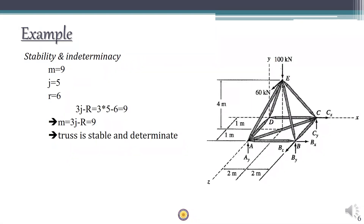Now we check the determinacy and stability of the structure. The number of reactions is 6: AY, BY, CY, BZ, BX, and CX. There are 5 joints (A, B, C, D, E) and 9 members total — 4 in the outer plane and 5 in the exit plane. Using M + R − 3J: 9 + 6 − 15 = 0, so the truss is stable and determinate. Externally, R − 6 = 0; internally, M − 3J + 6 = 0 — both confirm it is statically determinate.